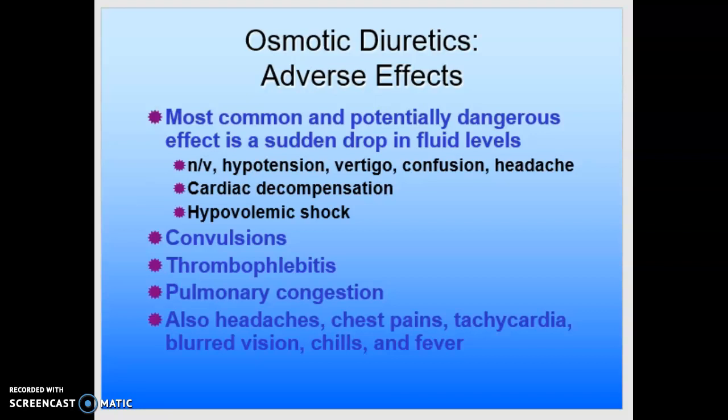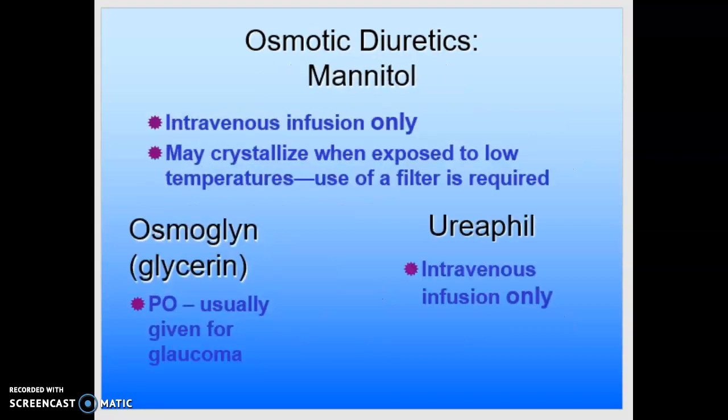These are not outpatient drugs. If we give mannitol, it's intravenous infusion only, and it's important to note that it may crystallize when exposed to low temperatures — use of a filter with this drug is always required. Ureafil is also intravenous infusion only. Osmoglin or glycerin can be given orally, and usually if it's given, it's given for glaucoma. We would want to make sure that we don't have contraindications to glycerin or glucose.